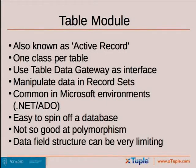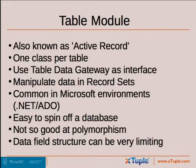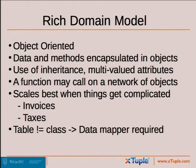In the table module approach, the tables become classes — one class per table — with some kind of gateway interface between your application and the database. You manipulate the data in record sets. The nice thing is, if you're starting fresh, it's easy to spin your whole object hierarchy right off the table structure in the database. But it doesn't really do polymorphism that well, and the data field structure can be really limiting. That was the struggle I had because the relationship between our tables and business objects were not one-to-one, and trying to force it into that arrangement never quite worked out.